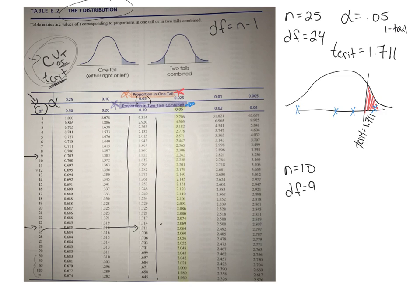But this time, let's have our alpha level set at 0.05 two tail, all right? So this time, we're going to split the alpha, so 0.05 two tail, degrees of freedom 9, so that's going to bring me all the way right there.